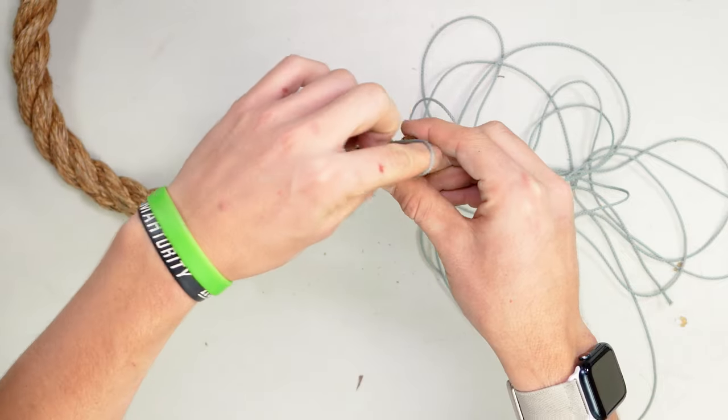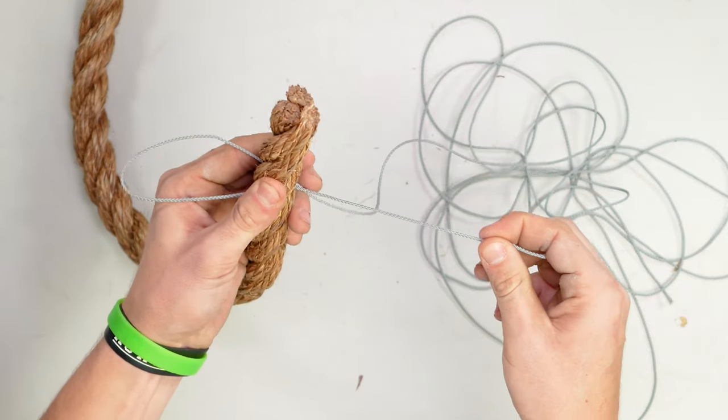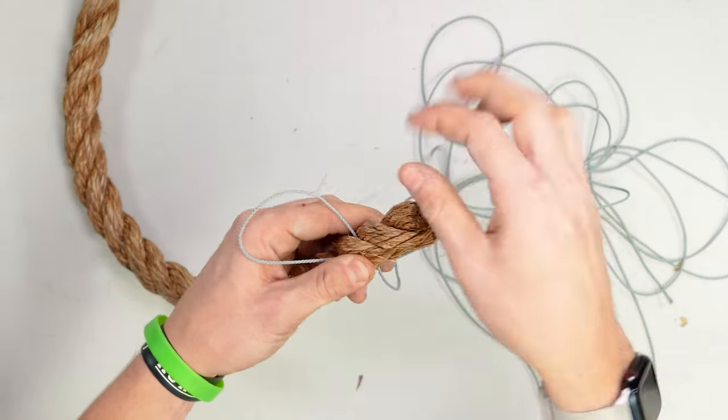Pull this bunny ear out so it's long enough to fit over the top of the rope and make sure this tag end is also long enough to come over the top of the rope.